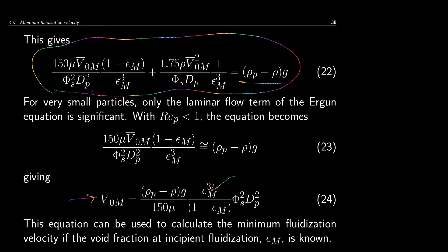The void fraction at minimum fluidization is approximately the same as the void fraction of the solid bed without fluidization, because at minimum fluidization the expansion is minimum. Therefore, you can take the same void fraction as that of the packed solid bed. This equation can be used to theoretically calculate the minimum fluidization velocity for laminar flow.